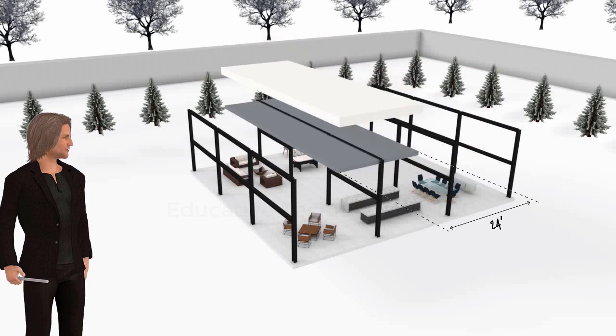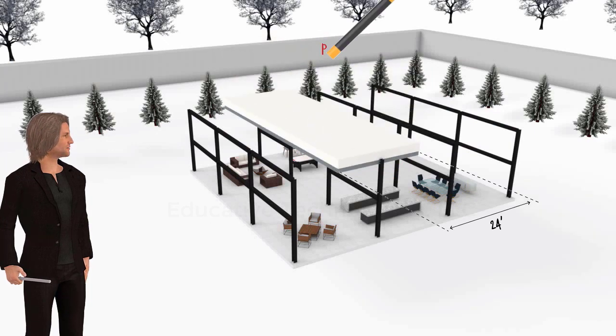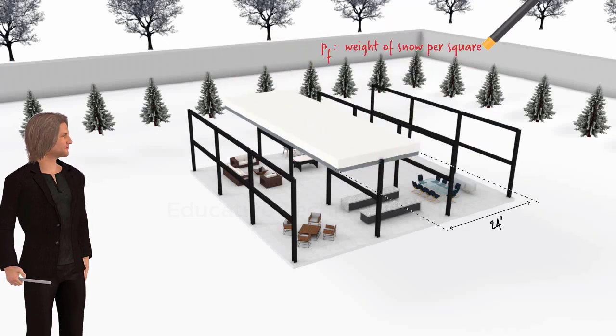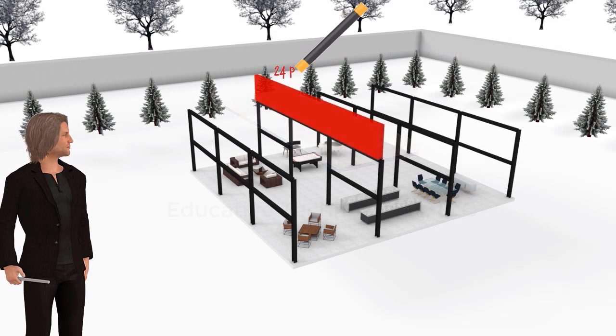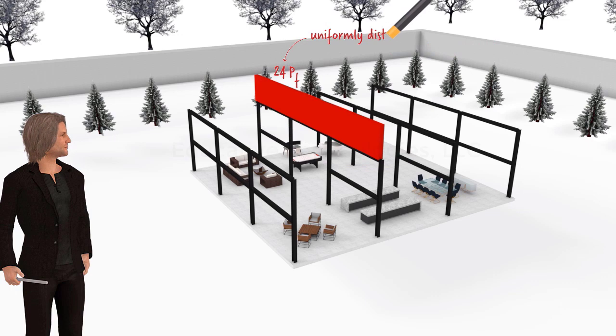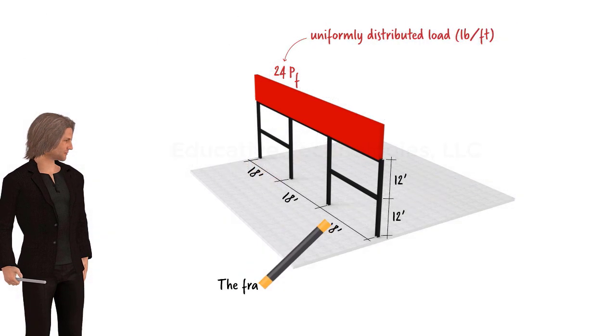If the weight per square foot of snow is denoted as PF, the resulting uniformly distributed snow load on the frame can be written as 24 PF. We consider the frame to be fixed at its base.